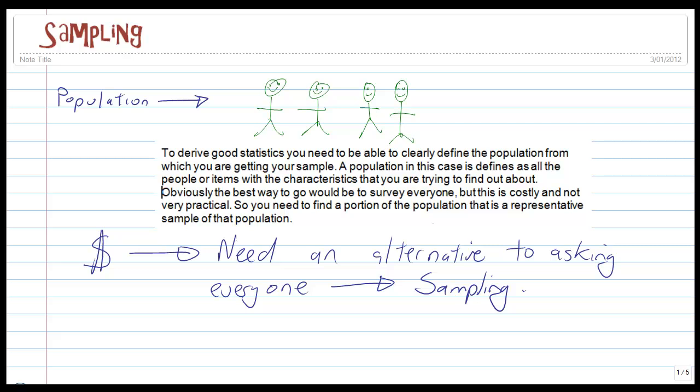So to derive good stats you need to be able to define really clearly the population you're going to be grabbing your sample from. A population is described or defined as all the people or items with the characteristics that you're trying to find out about. So everything is similar. So if you're going to interview Year 9's views on what music they like then your population might be all the Year 9's in South Australia or it might be all the Year 9's in your school. So you've just got to be careful how you define the population.